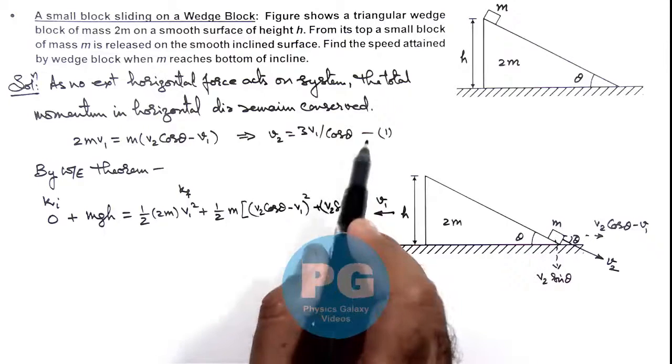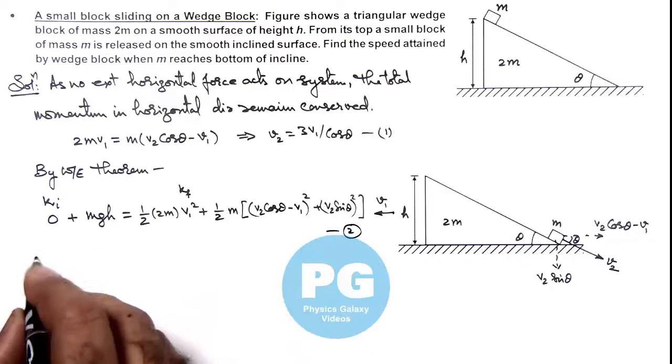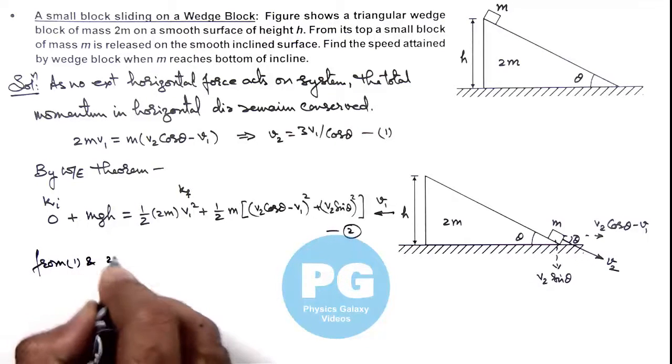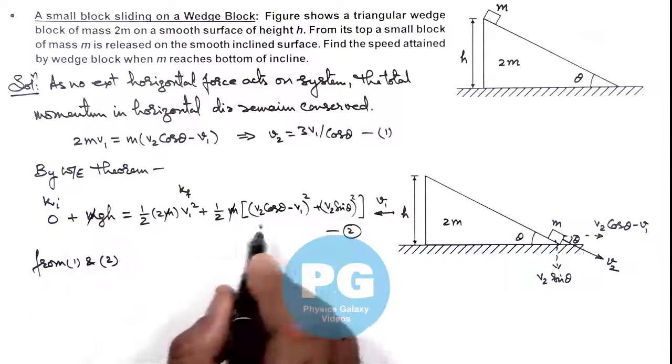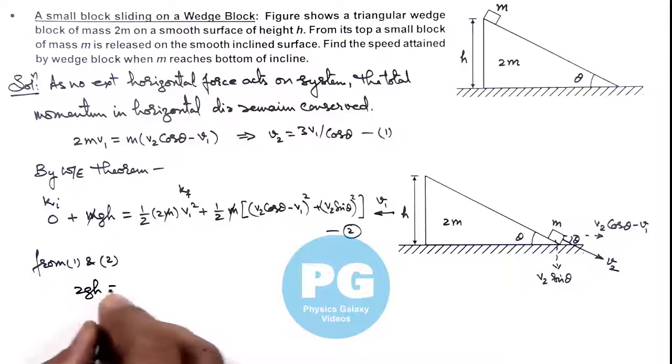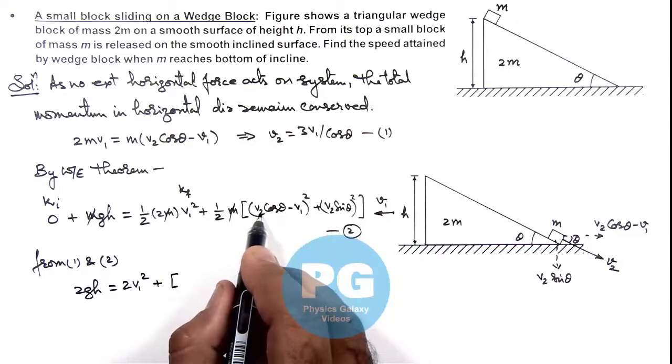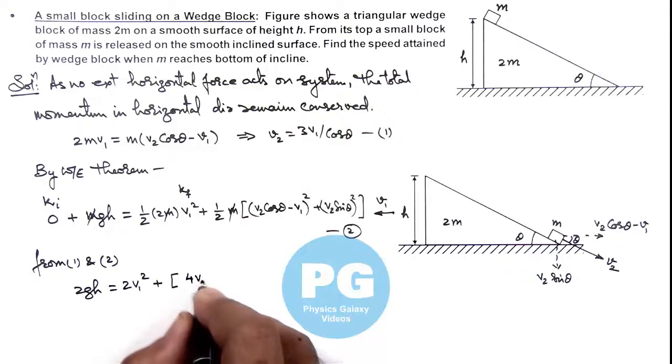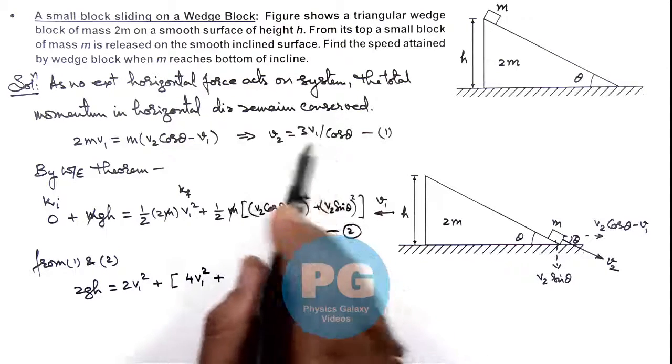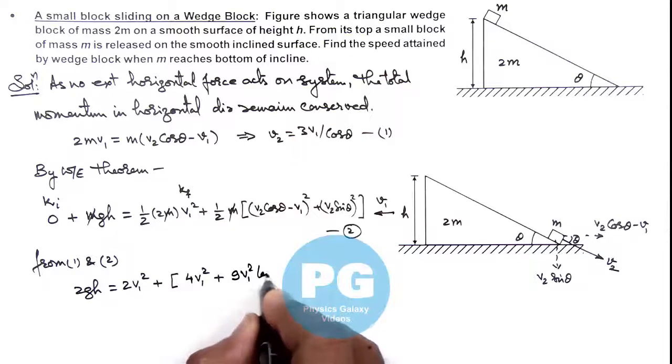Here if we substitute the value of v2 from equation 1 in equation 2, then here we can write from 1 and 2, if we put the values here m can be cancelled in this equation and rearranging the terms we can write 2gh is equal to 2 v1 square plus, here this v2 cos theta can be written as 3 v1, so this will be 4 v1 square plus if we put v2 as 3 v1 by cos theta, this will be 9 v1 square tan square theta.